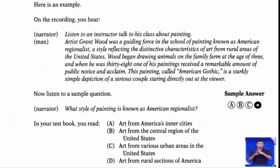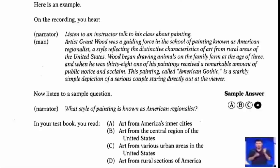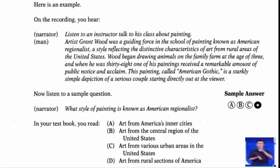Here is an example. On the recording you will hear: Listen to an instructor talk to his class about painting. Artist Grant Wood was a guiding force in the school of painting known as American Regionalist — a style reflecting the distinctive characteristics of art from rural areas of the United States. Wood began drawing animals on the family farm at the age of three, and when he was 38, one of his paintings received a remarkable amount of public notice and acclaim. This painting, called American Gothic, is a starkly simple depiction of a serious couple staring directly out at the viewer. Now listen to a sample question.